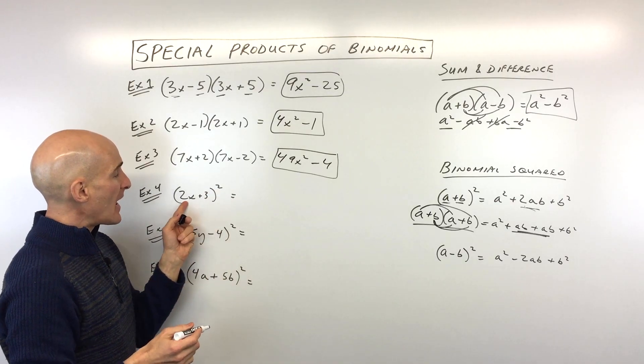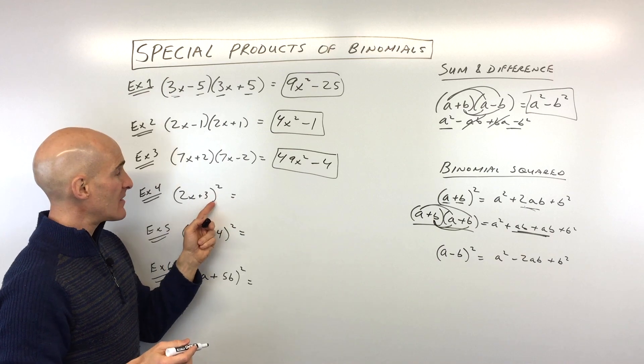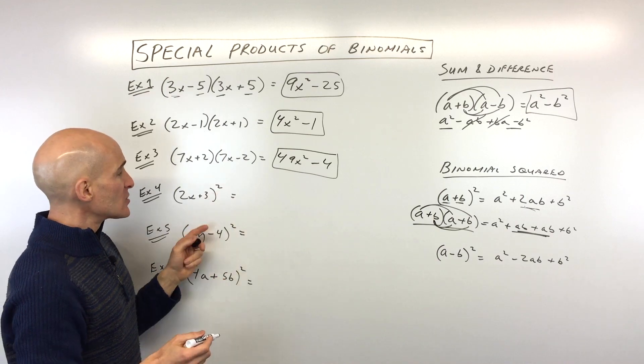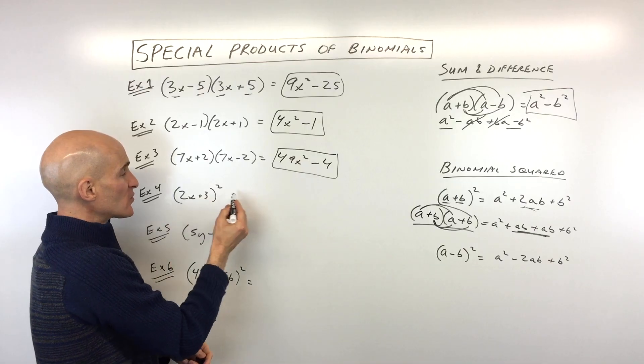But let's take a look. So 2x plus 3 is squared. Now, this is a binomial squared. It's the same thing times itself twice. So we're going to use this pattern over here. We've got the first term squared,